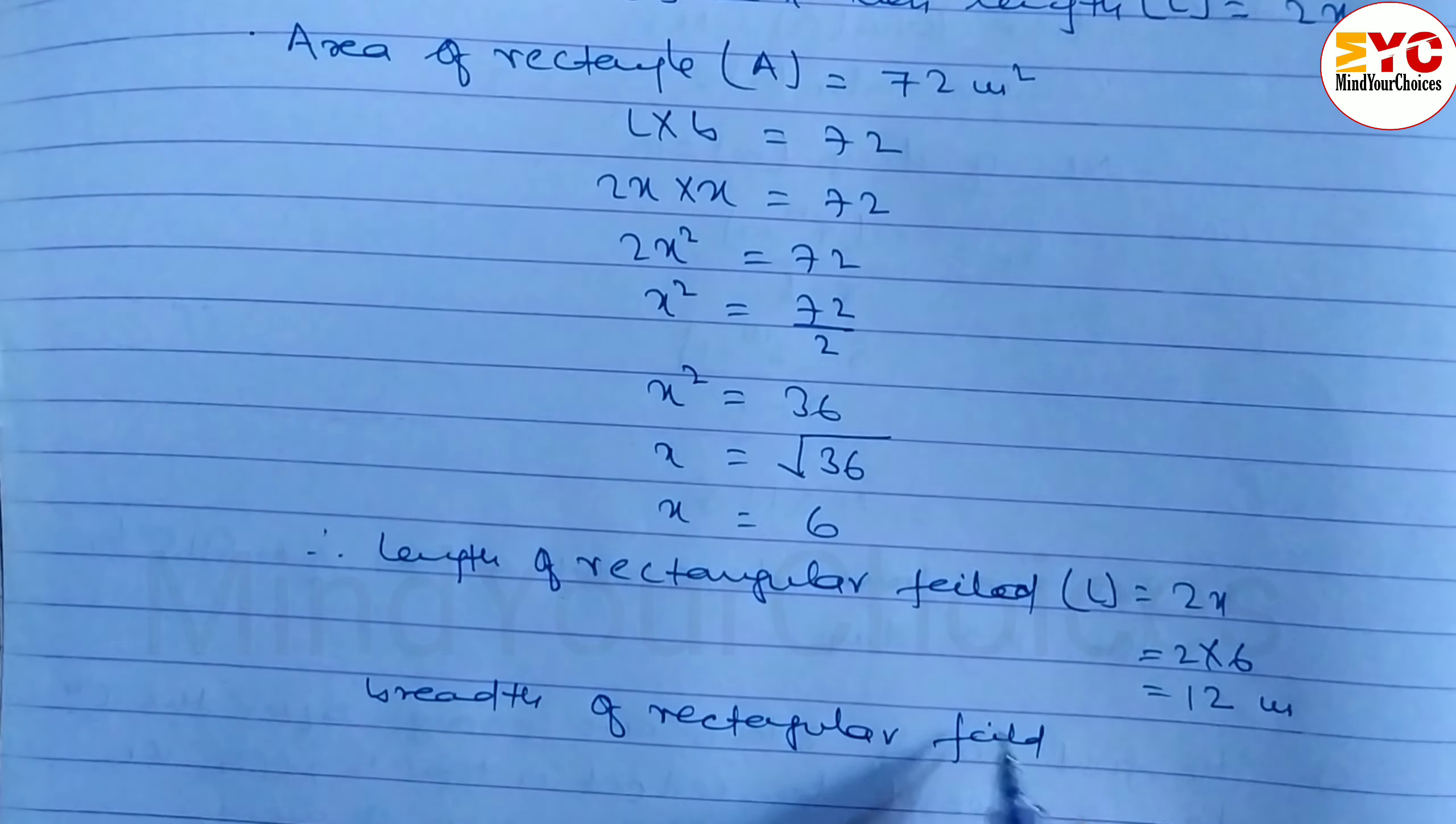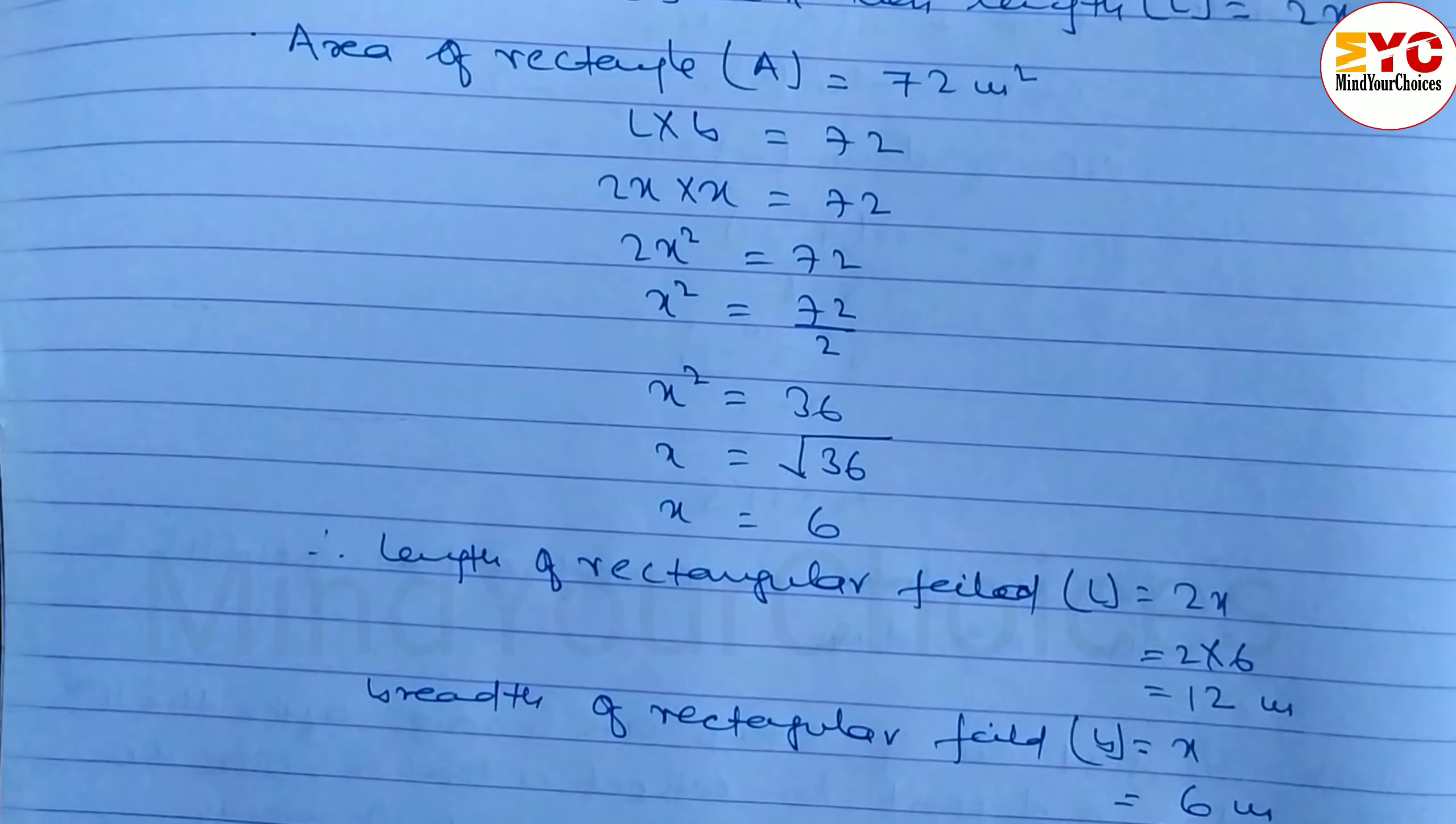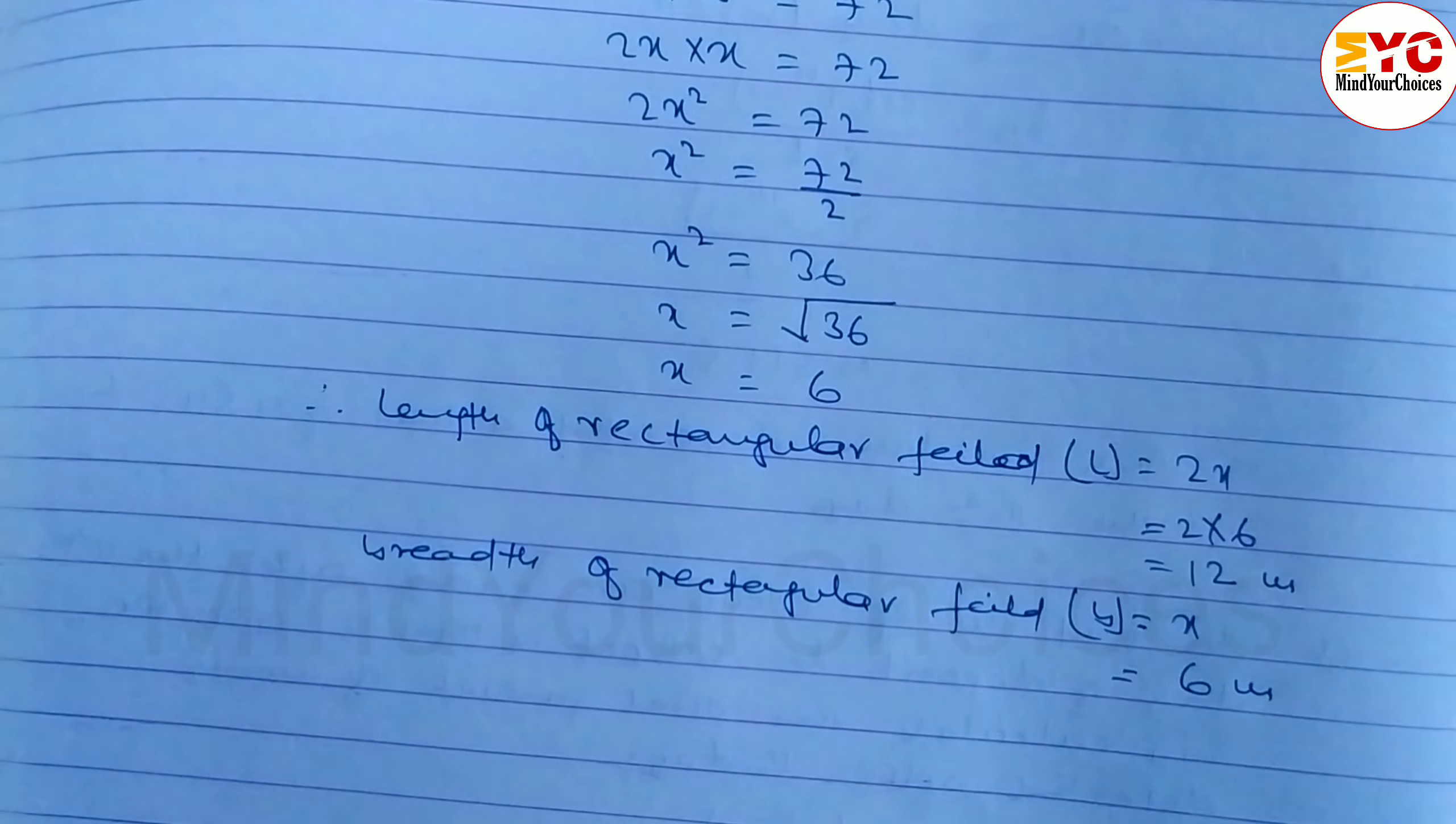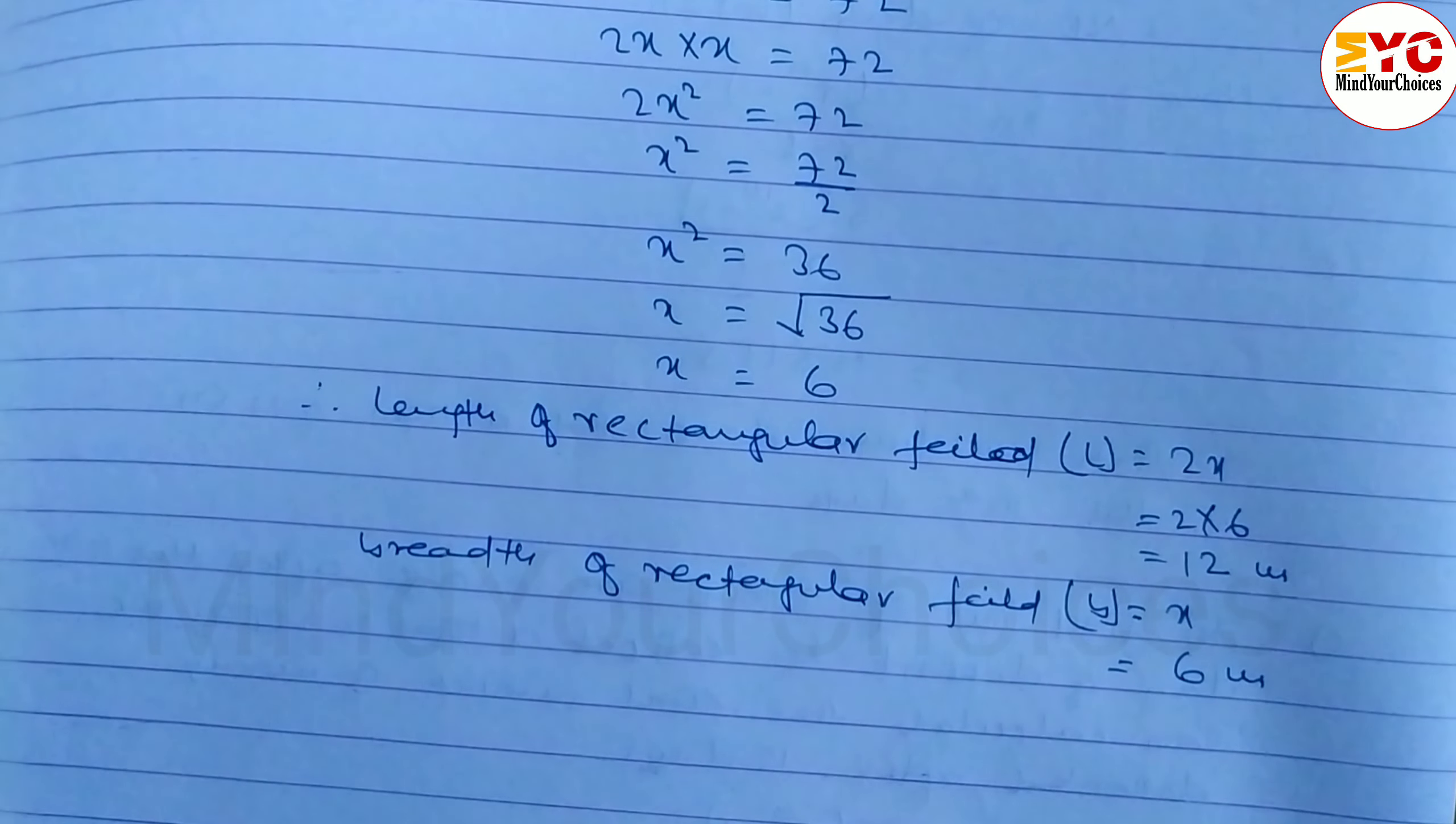Breadth of rectangular field B is equal to x, which we calculated as 6, so 6 meter. So length and breadth are 12 and 6 meter.